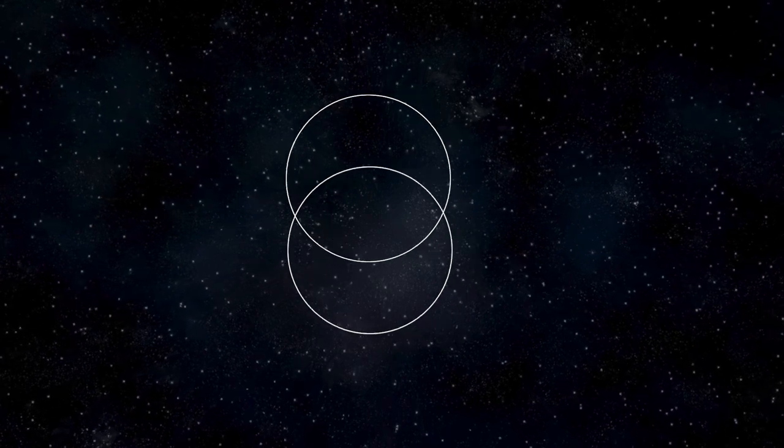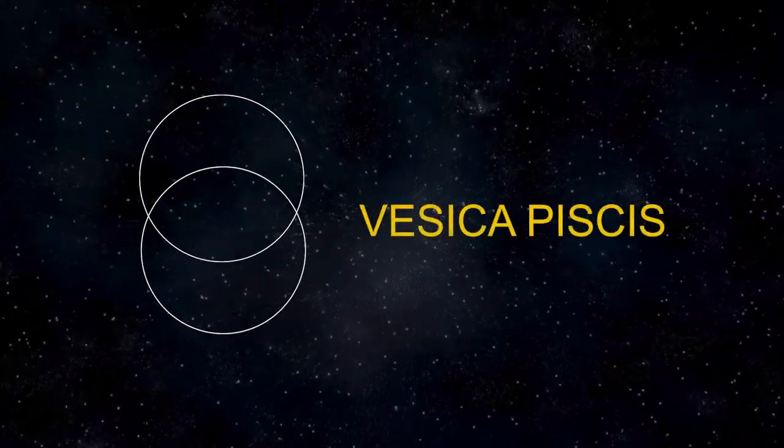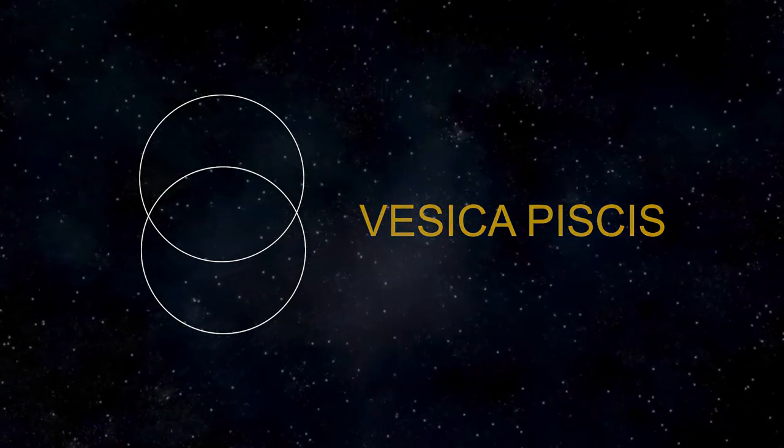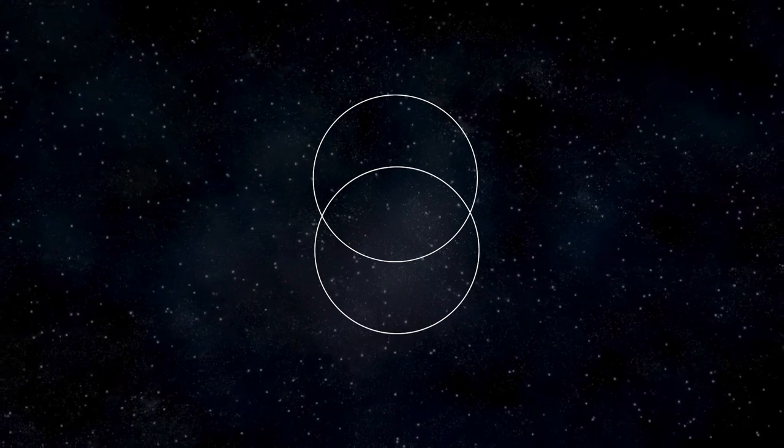the Vesica Pisces is formed when two circles overlap. This shape, resembling an eye or a fish, represents duality and the emergence of consciousness and creation. It is the geometric seed from which more complex forms emerge.